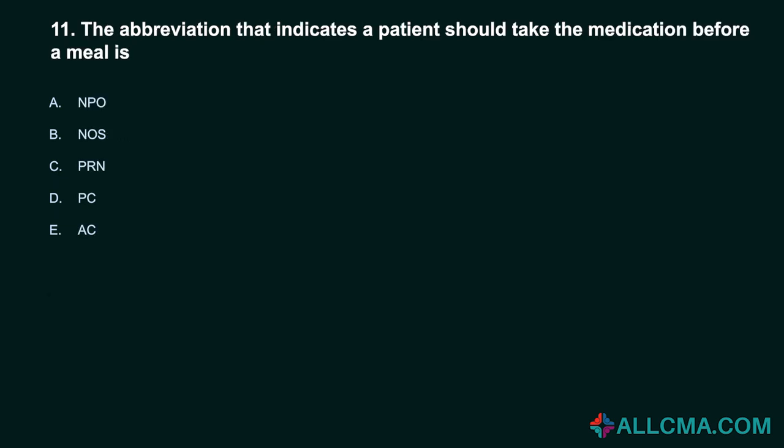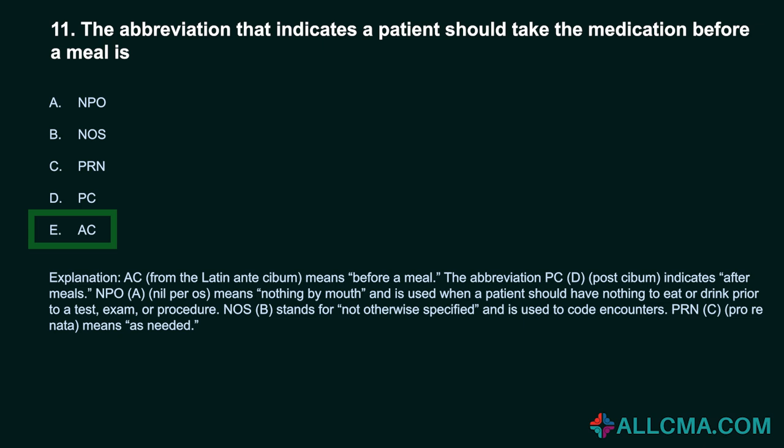Question 11: The abbreviation that indicates a patient should take the medication before a meal is: A. NPO. B. NOS. C. PRN. D. PC. E. AC. Correct answer: E. AC. AC, from the Latin ante cibum, means before a meal. The abbreviation PC, post cibum, indicates after meals. NPO, nil per os, means nothing by mouth and is used when a patient should have nothing to eat or drink prior to a test, exam, or procedure. NOS stands for not otherwise specified and is used to code encounters. PRN, pro re nata, means as needed.